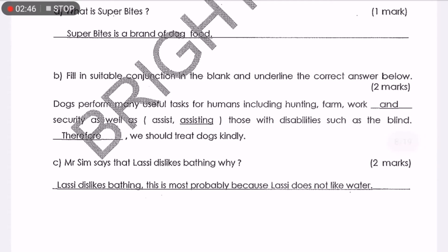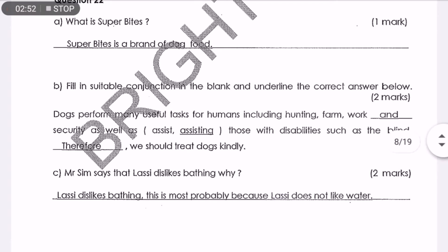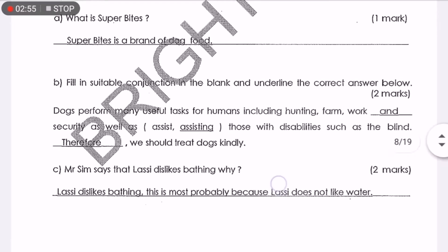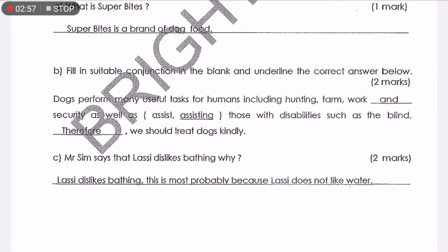Fill in the suitable conjunctions in the blank and underline the correct answer below. What is a conjunction? Conjunction in Bahasa is 'kata hubung.' Now there's a trick to answer this question — you need to read the full sentence before you answer. You cannot answer when you read the question halfway because sometimes the question can be tricky, so you need to read the full sentence.